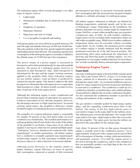The power output of a piston engine is measured in horsepower, determined primarily by RPM and manifold pressure. The power of a turboprop engine, however, is measured in shaft horsepower (SHP), determined by the RPM and the torque (twisting moment) applied to the propeller shaft. Since turboprop engines are gas turbine engines, some jet thrust is produced by exhaust leaving the engine. This thrust is added to the shaft horsepower to determine the total engine power, or equivalent shaft horsepower (ESHP). Jet thrust usually accounts for less than 10% of the total engine power.